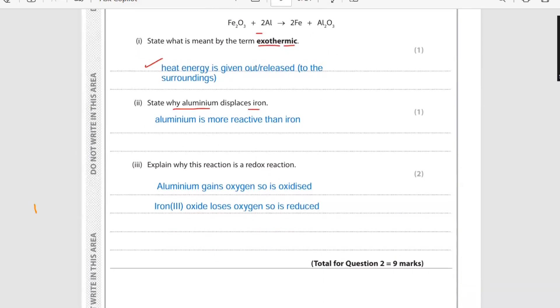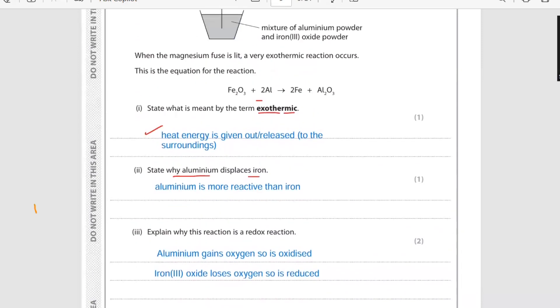Explain why this reaction is a redox reaction. As you see here, aluminium in this equation is gaining oxygen so it's getting oxidized, and iron oxide is losing oxygen so it's getting reduced. That's why aluminium gains oxygen so it is oxidized.